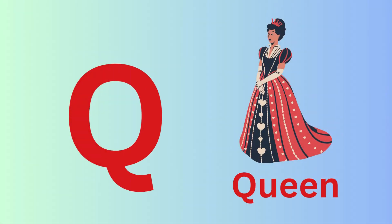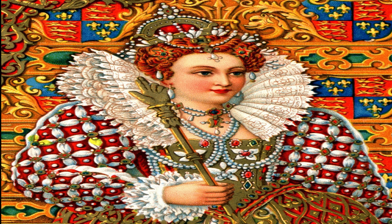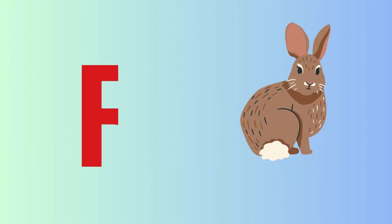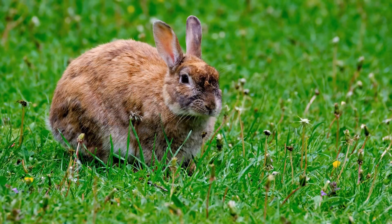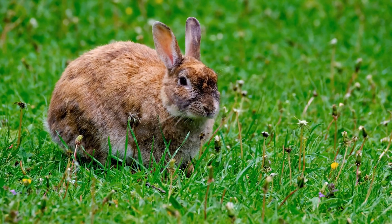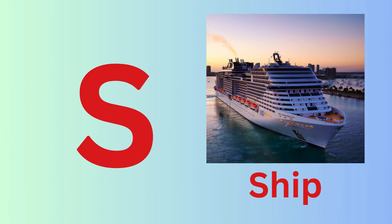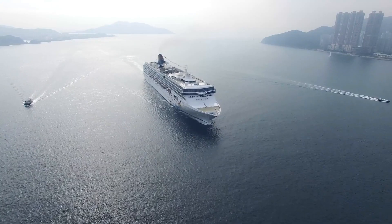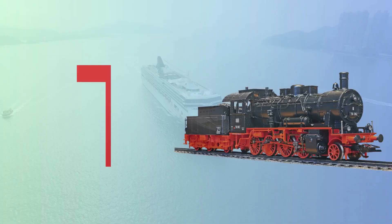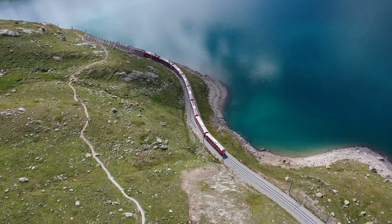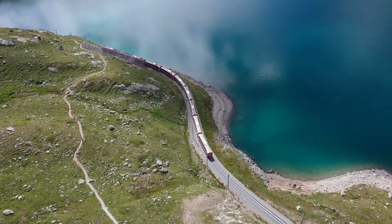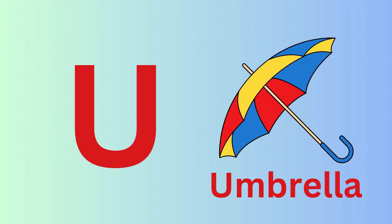Q for Queen. R for Rabbit. S for Seat. T for Train. U for Umbrella.